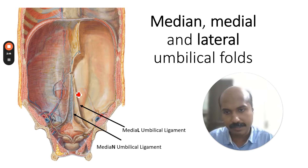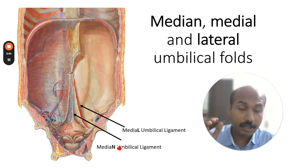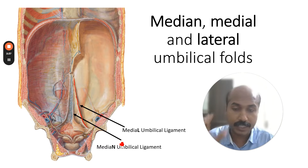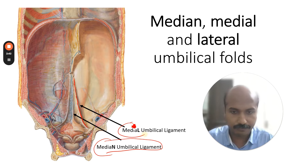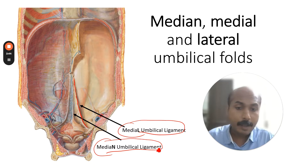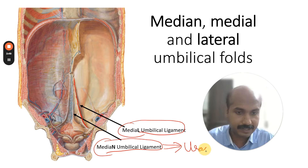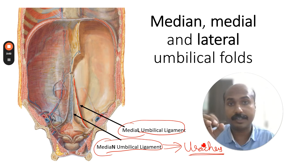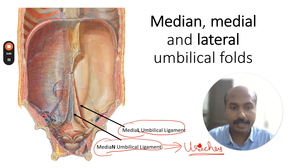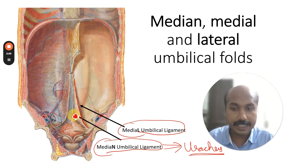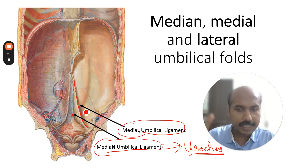Just lateral to the median umbilical ligament is the medial umbilical ligament. A very common exam question is: what are these structures remnants of? The median umbilical ligament is a remnant of the urachus, which is derived from the allantoic diverticulum — so either 'urachus' or 'allantoic diverticulum' can be accepted as the answer.